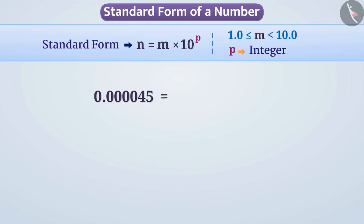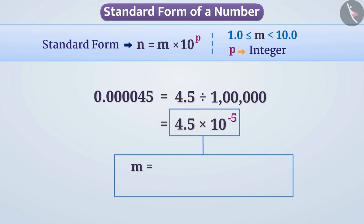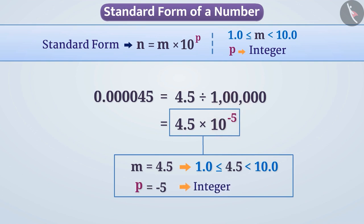Now let us look at this number. We can represent this number and write it in exponential form as follows. We see that the value of m here is 4.5, which is greater than 1.0 and smaller than 10.0, and the value of p is minus 5, which is an integer. In this way, it is the standard form of this number.